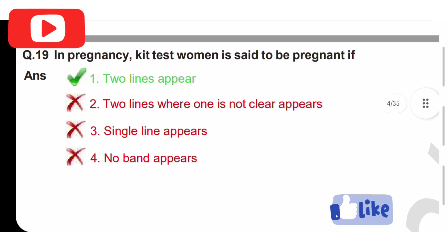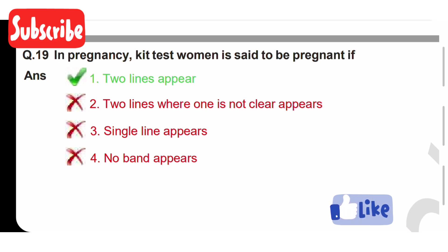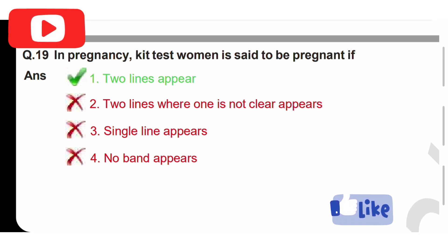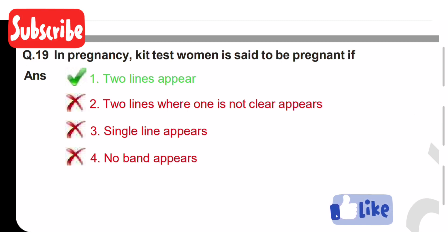In a pregnancy kit test, a woman is said to be pregnant if: option one is two lines appear, option two is two lines where one is not clear, option three is a single line appears, option four is no band appears. Option one is the correct answer — two lines appear.